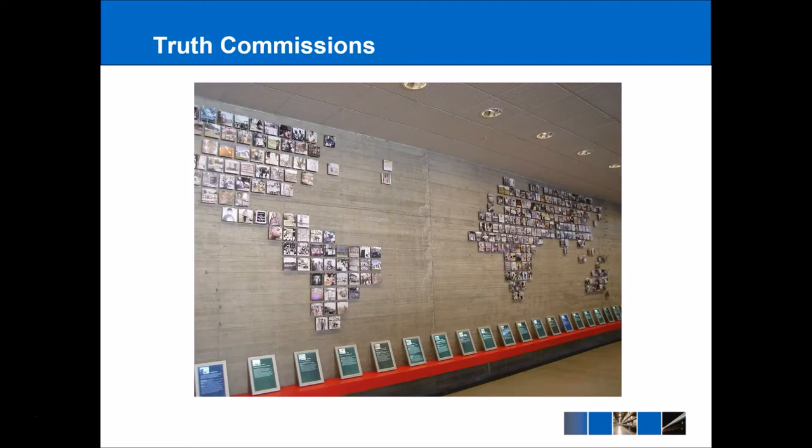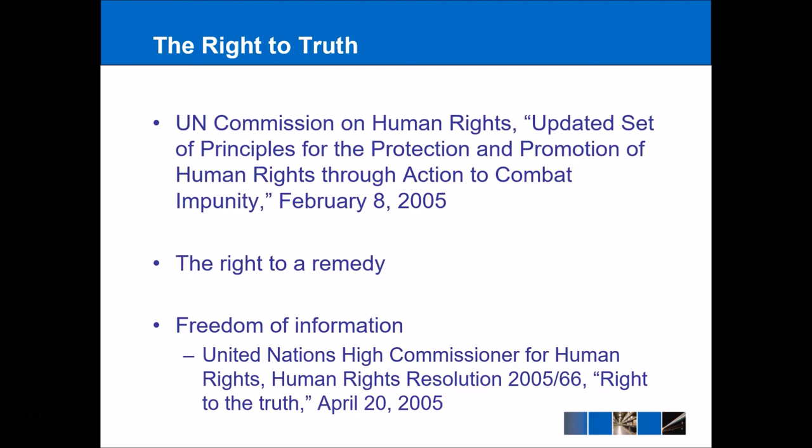This is a picture of all of the truth commissions that have ever occurred in the world, taken at the Museo de la Memoria y los Derechos Humanos, or the Museum of Memory and Human Rights, based in Chile. The key founding principle behind truth commissions is the right to truth, recognized often as a piece of customary international law — there is reference made to it in the UN Commission report. The Inter-American Court of Human Rights has also recognized this right to truth. Furthermore, there is the idea of the right to a remedy, recognized as a piece of international law — in a European context, the European Convention on Human Rights allows for the right to a remedy under Article 13. An important part of truth commissions is also the right to freedom of information.